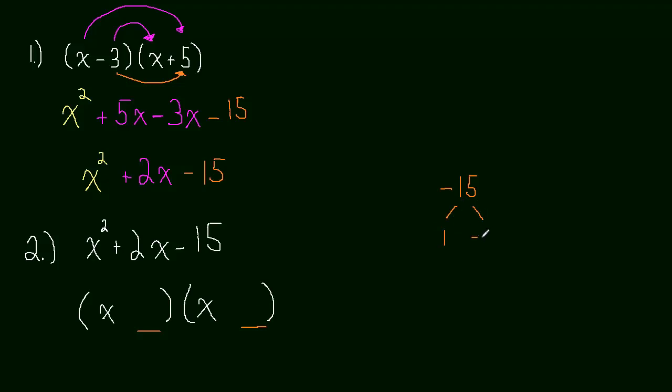They could be 1 and negative 15, or they could be negative 1 and 15, because both of those groups of factors multiply to negative 15. Also could be 3 and 5, or negative 3 and 5. And those are the factors of negative 15. So now what we have to do is decide if this is going to factor into x plus or minus something and x plus or minus something, we just have to pick from these now.